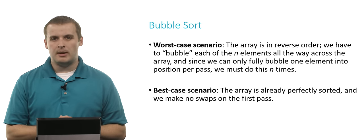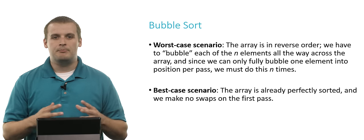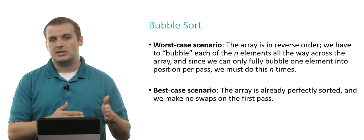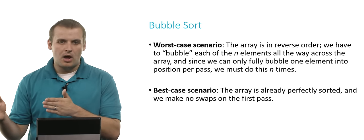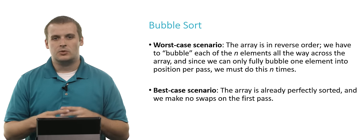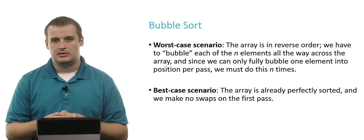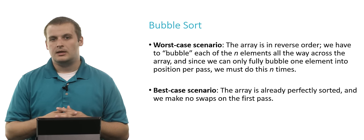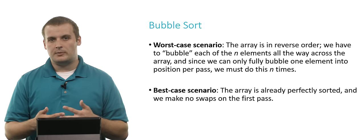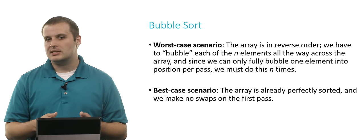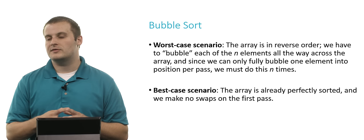So what's the worst case scenario with bubble sort? In the worst case, the array is in completely reverse order, so we have to bubble each of the large elements all the way across the array, and also bubble all of the small elements back across the array. Each of the n elements has to move across all of the other n elements. In the best case, though, this is slightly different from selection sort — the array is already sorted when we go in, so we don't have to make any swaps on the first pass.